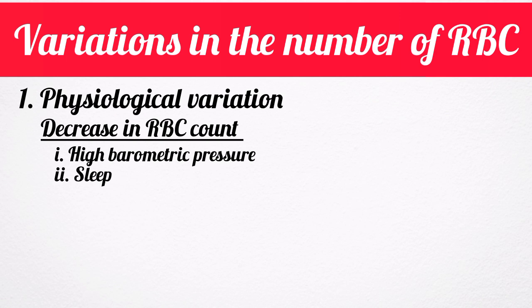Number three is pregnancy. During pregnancy, the red blood cell count decreases. This is because of the increase in ECF volume. An increase in ECF volume increases the plasma volume and results in hemodilution. So there is a relative reduction in the red blood cell count.